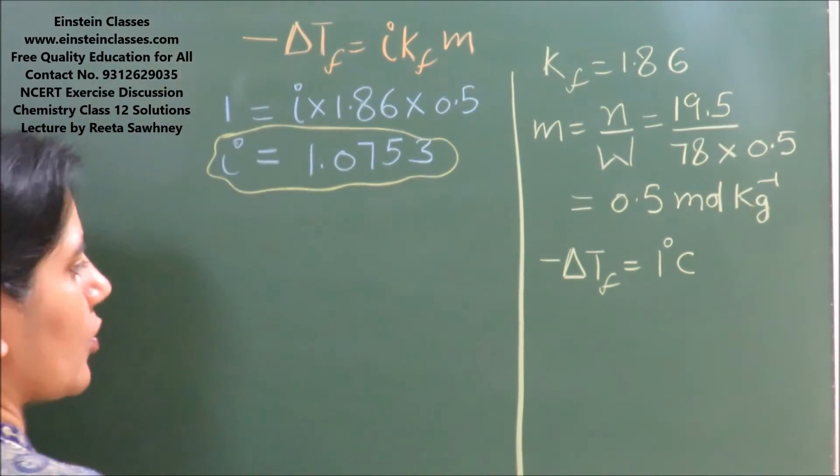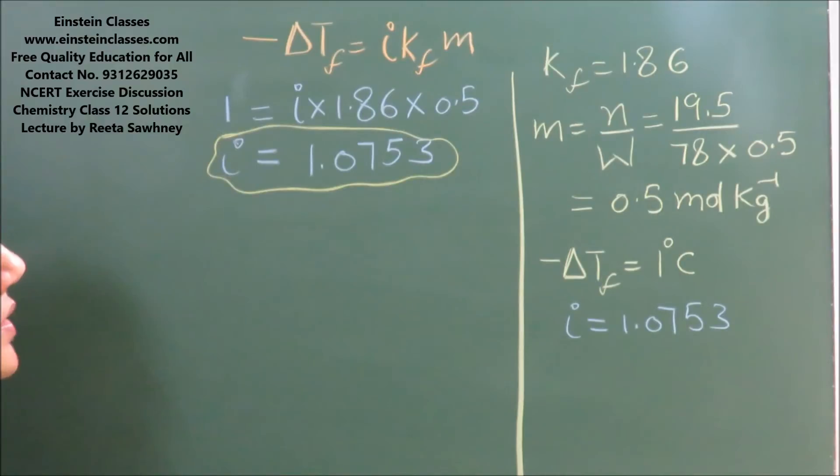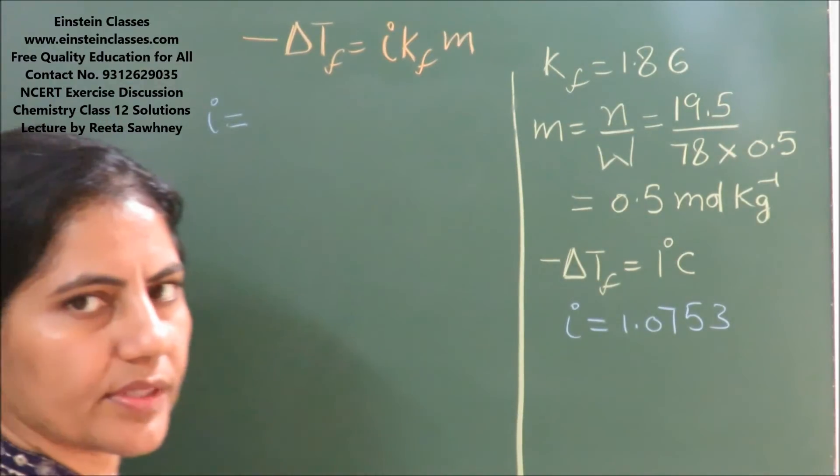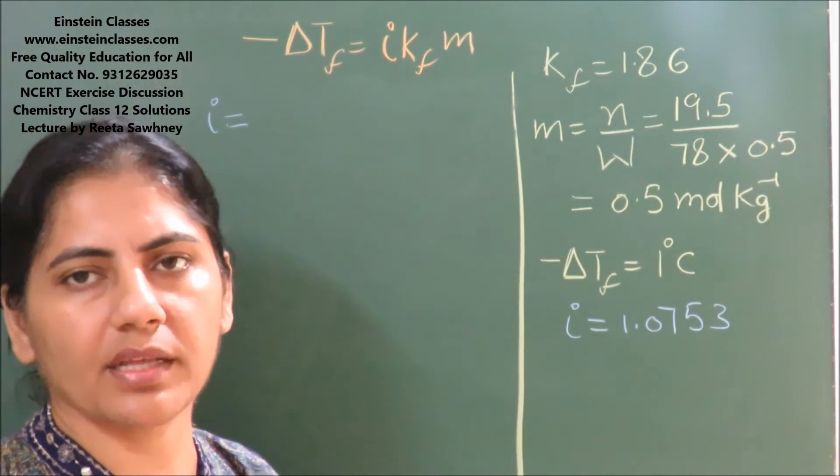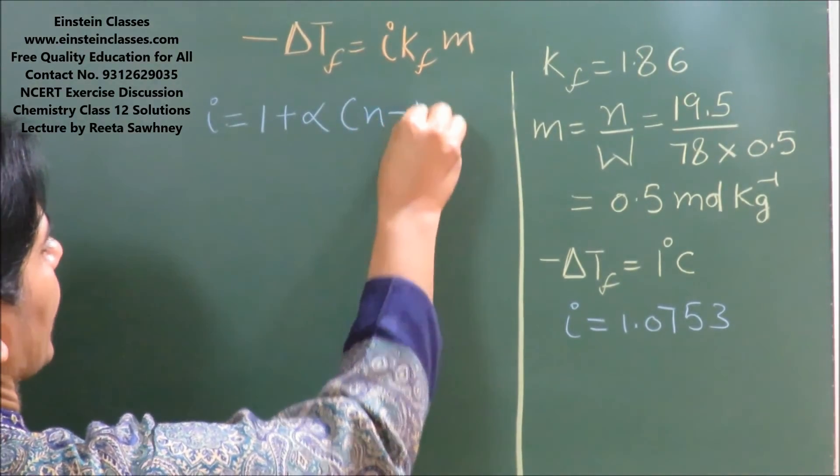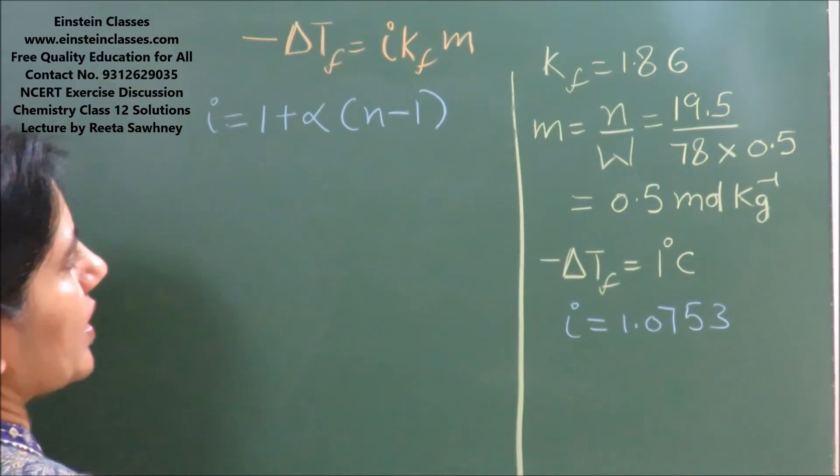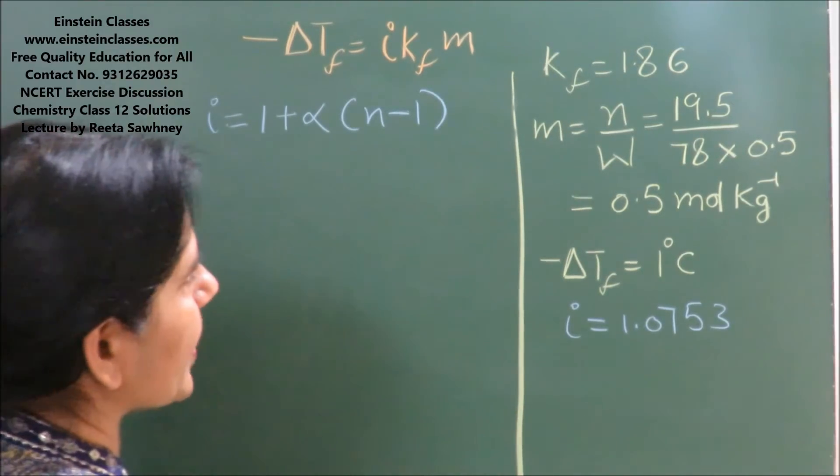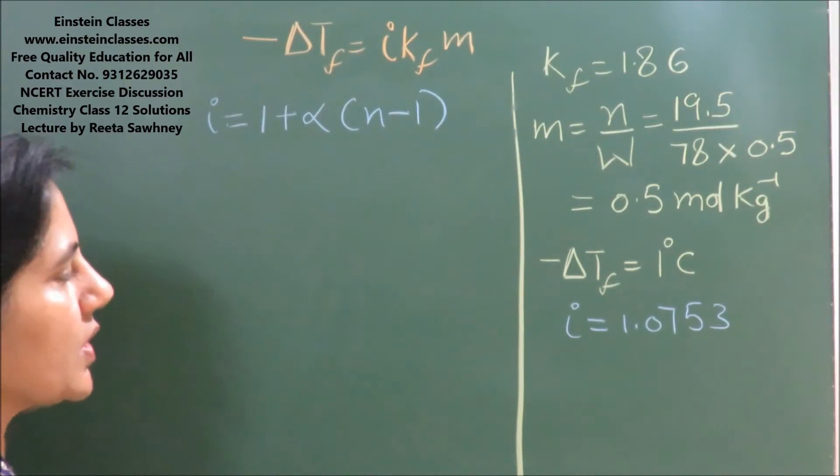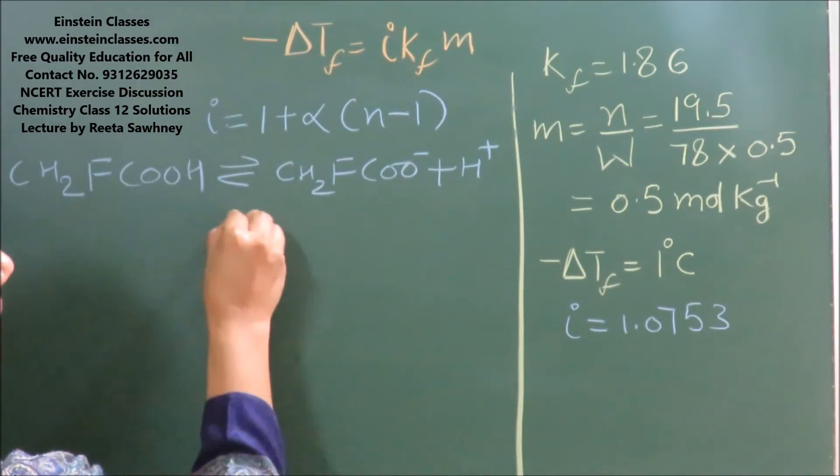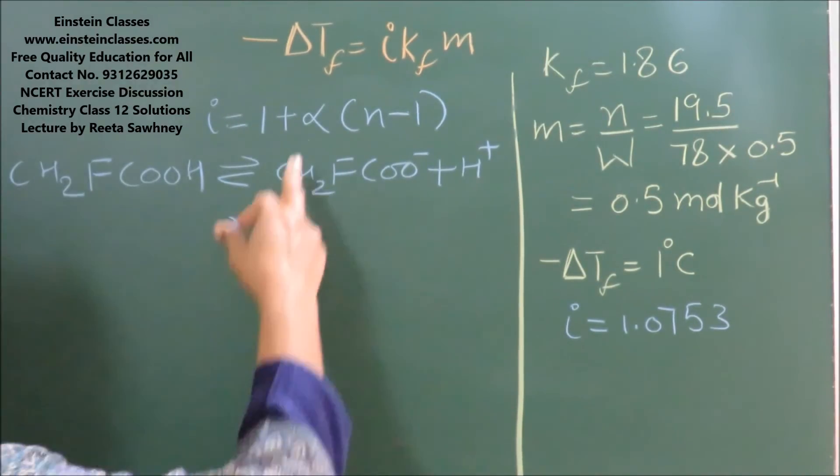Now, we need to find out the ionization constant of the acid, so we need to find out Ka. We know that when solute ionizes partially, then van't Hoff factor i can be written as 1 + α(n - 1). Here n is the number of ions given by one mole of solute. Fluoroacetic acid on ionization gives 2 ions, so the value of n here is 2. Now we should know the value of α.